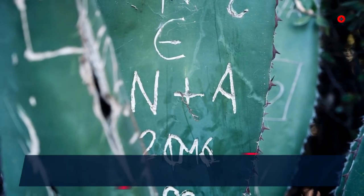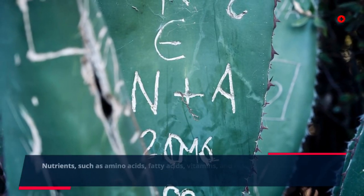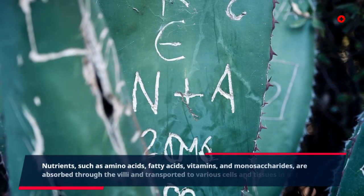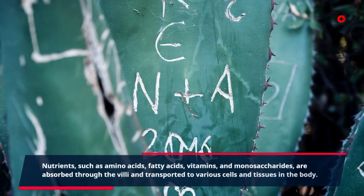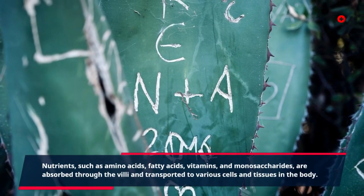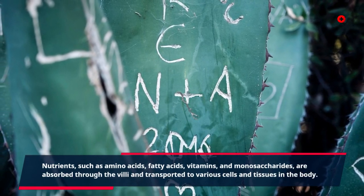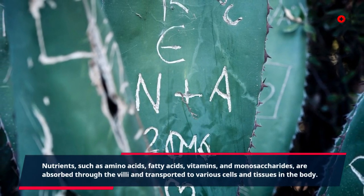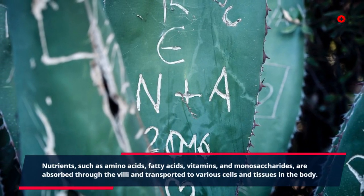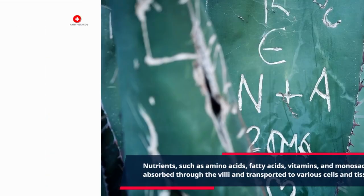These structures vastly increase the surface area available for nutrient absorption into the bloodstream. Nutrients such as amino acids, fatty acids, vitamins, and monosaccharides are absorbed through the villi and transported to various cells and tissues in the body.